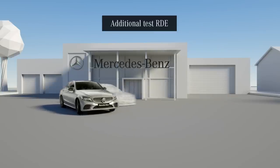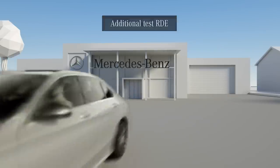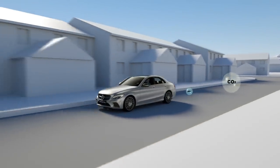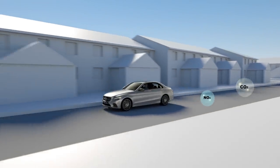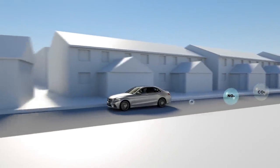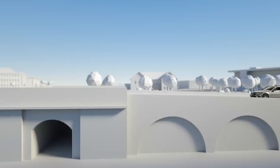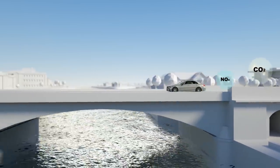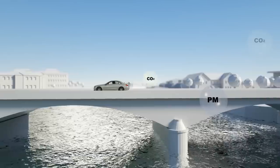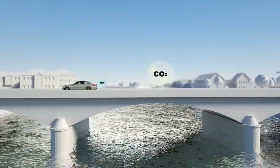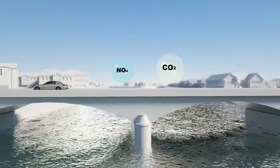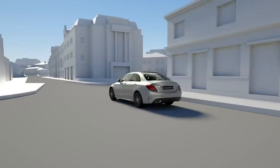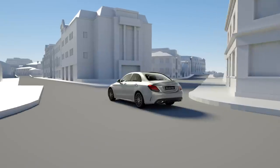In future, a vehicle's emissions will also be measured in real road traffic in addition to the WLTP test on the roller dynamometer in the laboratory, where the real driving emissions, or RDE for short, are verified. The pollutant emissions are determined with the aid of a portable measuring device, and adherence to the values measured in the lab is checked.